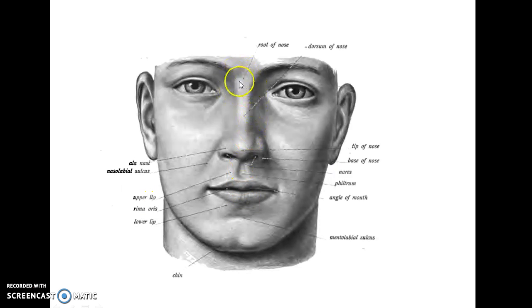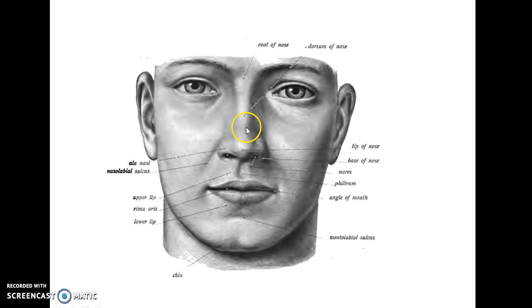This region is called the bridge of the nose and this region is called the dorsum of the nose. This is the normal anatomy of the human nose.